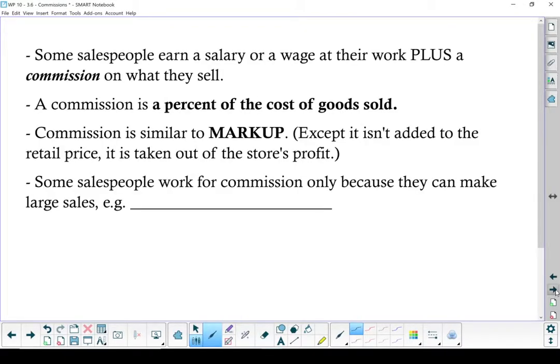Commission is another way of earning income. Some salespeople make an hourly wage plus any commission on what they sell. A commission is a percentage of the goods sold. That works similar to markup. It's calculated the same way.